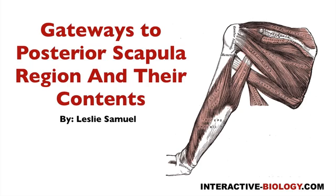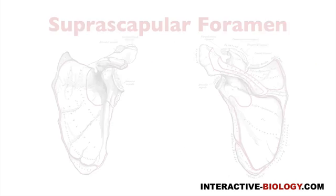Hello and welcome to another episode of Interactive Biology TV, where we're making biology fun. My name is Leslie Samuel, and in this video I'm going to be talking about the gateways to the posterior scapular region and the contents that we find there. We're talking about openings by which we can get from the anterior scapular region to the posterior scapular region, where nerves from the brachial plexus and arteries from the axillary artery travel to innervate the muscles found there and supply them with blood.